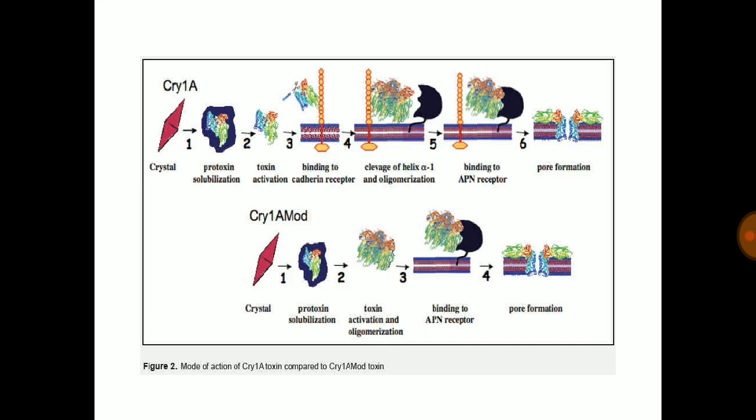This diagram depicts the mode of action of cry 1-A toxin compared to cry 1-A mod toxin. Cry 1-A mod toxin overcomes the resistance power inherent in certain insect pests against a particular toxin.